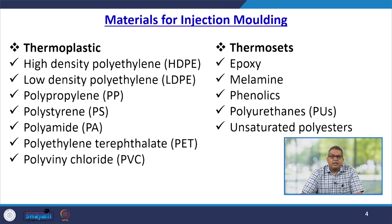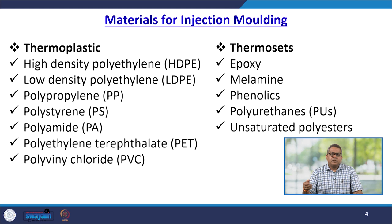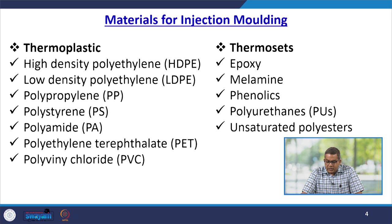Broadly, we can divide these materials into two segments: thermoplastics and thermosets. In thermoplastics, you can use HDPE (high density polyethylene), low density polyethylene (LDPE), polypropylene, polystyrene, polyamide, polyethylene terephthalate (PET), and polyvinyl chloride. In thermosets, there are various epoxies, melamines, phenolics, polyurethane, and unsaturated polyester — all of which can be injection moulded.